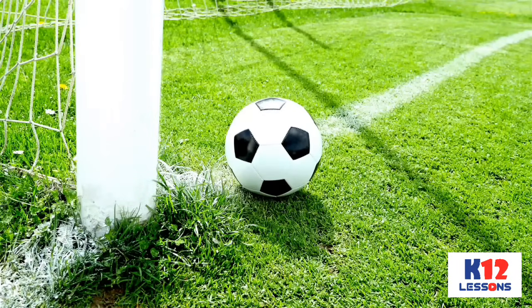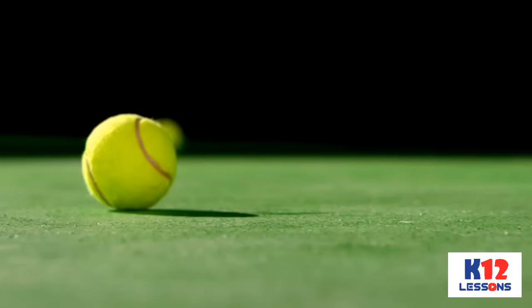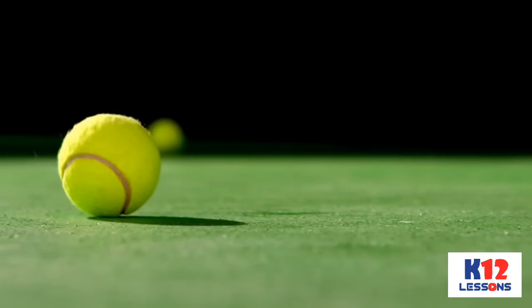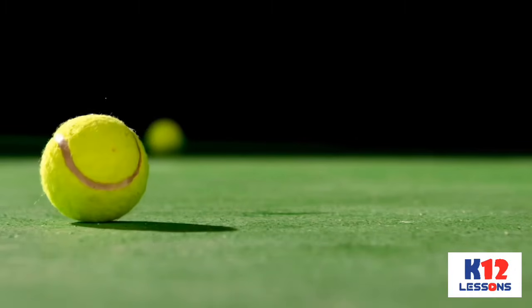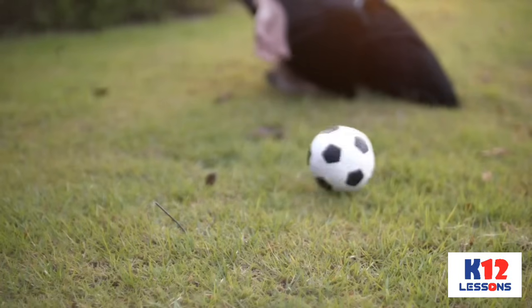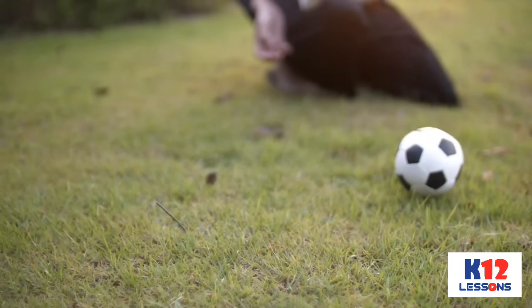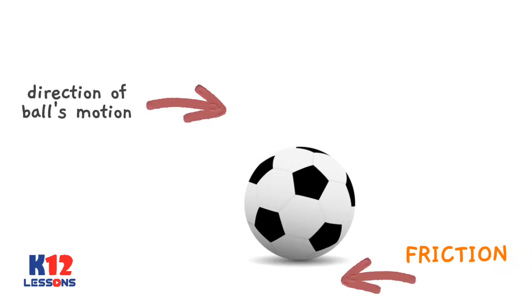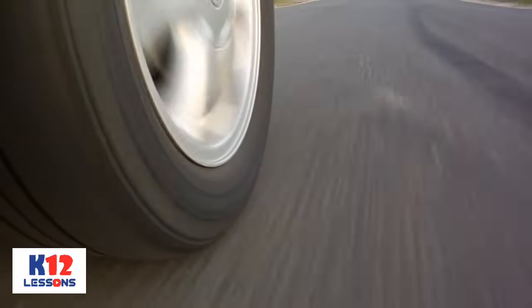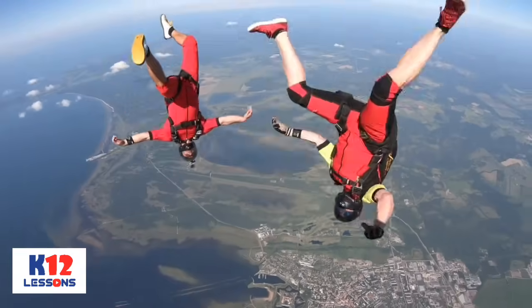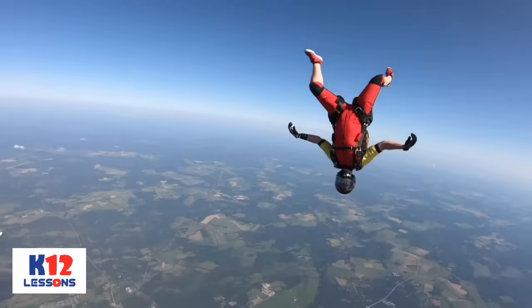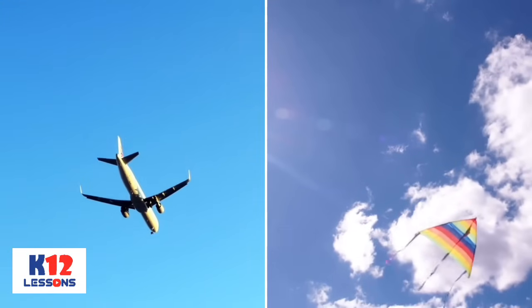But how does friction occur? While the ball is rolling on the floor, the surface of the rolling ball rubs against the surface of the floor. Friction always acts opposite the direction of an object's motion. The floor exerts a frictional force opposite the ball's motion. Friction does not only occur on the surfaces of solid objects rubbing against one another, but it also occurs when air particles rub against objects falling down, thrown upward, and flying airplanes and kites.